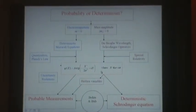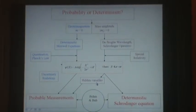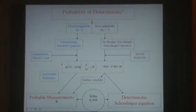So we have hidden variables, and they do affect the probability measurements.